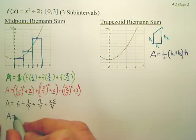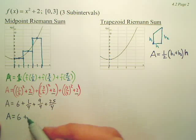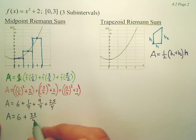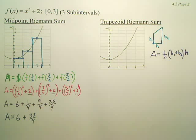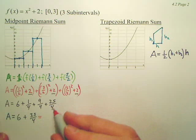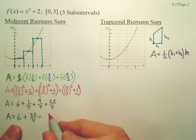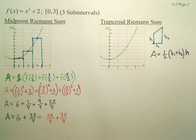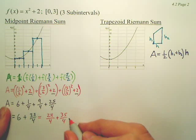So my area is 6 plus 35 fourths. What are we going to change 6 to to make it fourths? We'll multiply by 4, so 24 fourths plus 35 fourths. So it looks like we have 59 fourths.